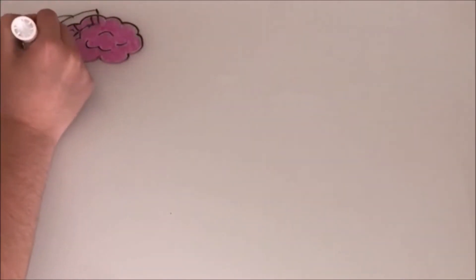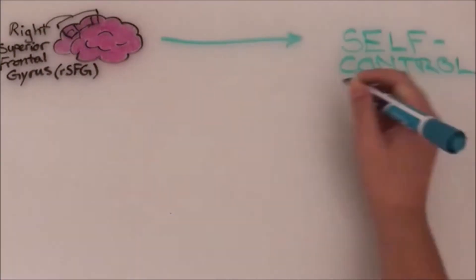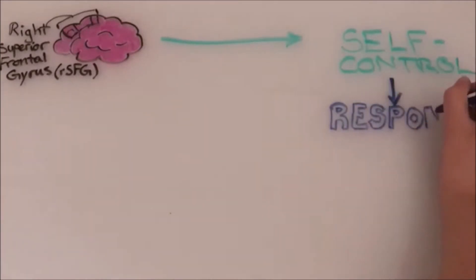The right superior frontal gyrus or RSFG is a three-part patch in the front part of the brain that has to do with your self-control. Response inhibition is a clinical term to describe a chunk of self-control.